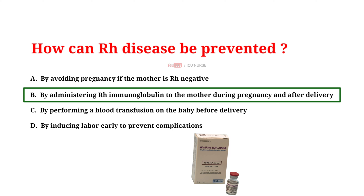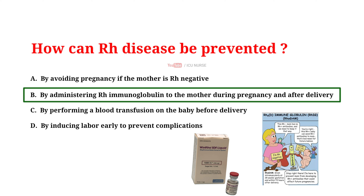Rh immunoglobulin is a medication used to prevent and treat Rh disease in newborns. It works by binding to Rh positive cells in the mother's bloodstream, preventing her body from producing antibodies against them. This prevents the mother's immune system from attacking Rh positive cells in subsequent pregnancies. Rh immunoglobulin is typically given to the mother during pregnancy and after delivery to prevent the development of Rh antibodies in her bloodstream, which could otherwise cause hemolytic disease of the newborn.